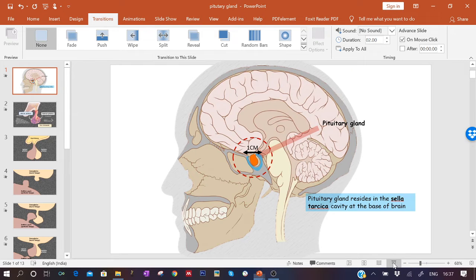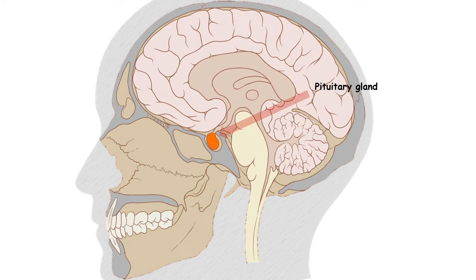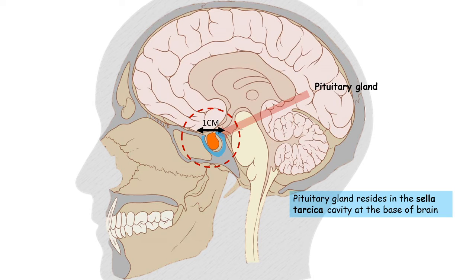In this video we are going to talk about the pituitary gland. The pituitary gland is roughly 1 cm in diameter and it weighs about 1 gram. It is situated in a bony cavity known as sella turcica at the base of the brain.